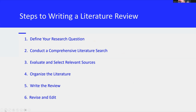Now I'll walk you through the steps to writing a literature review. Step one: define your research question. Start by clarifying the focus of your review. A well-defined research question will guide your literature search and ensure that your review remains relevant to your research objectives. Step two: conduct a comprehensive literature search. Use academic databases and journals to gather relevant literature — searching for articles, books, and other sources that address your research question. Step three: evaluate and select relevant sources. Assess the credibility and relevance of the sources you find, looking for high-quality, peer-reviewed studies.